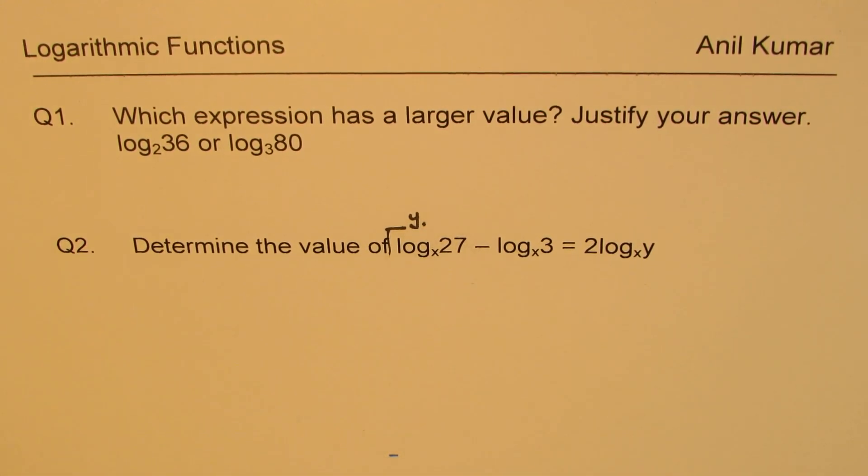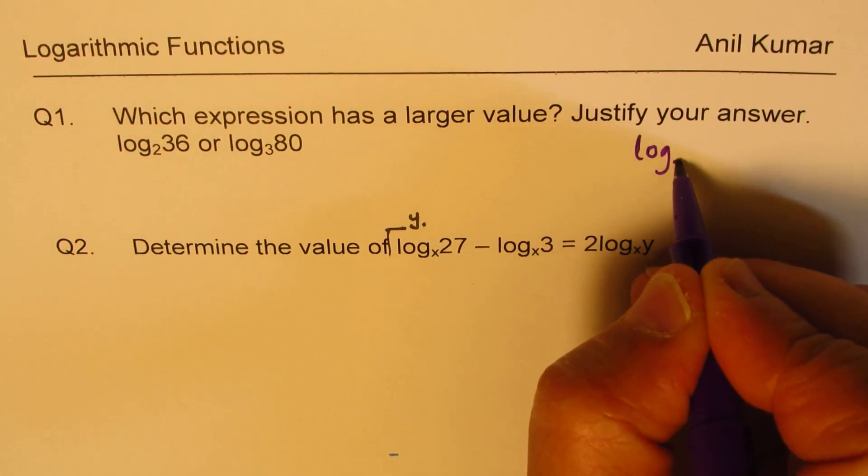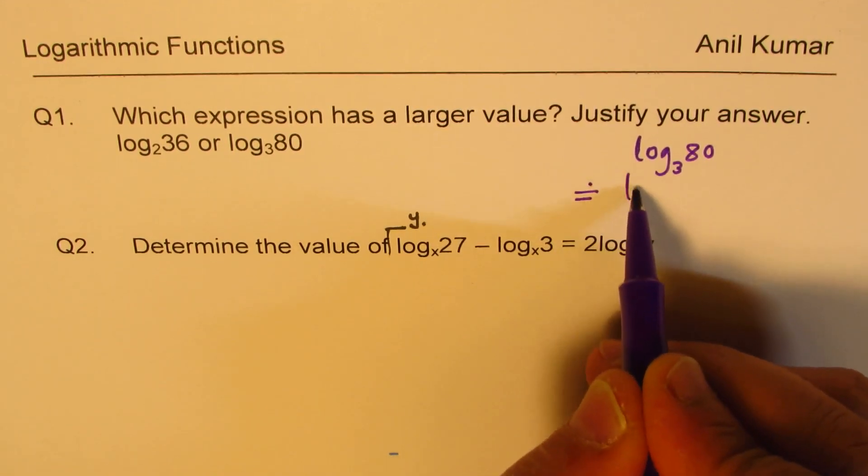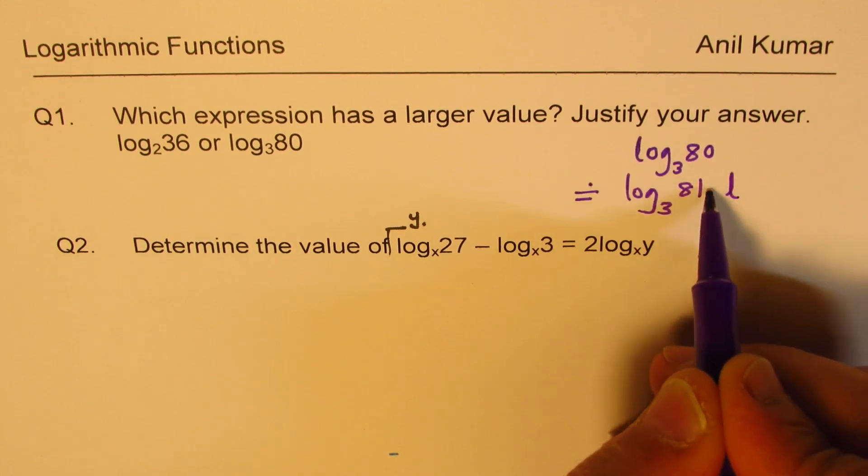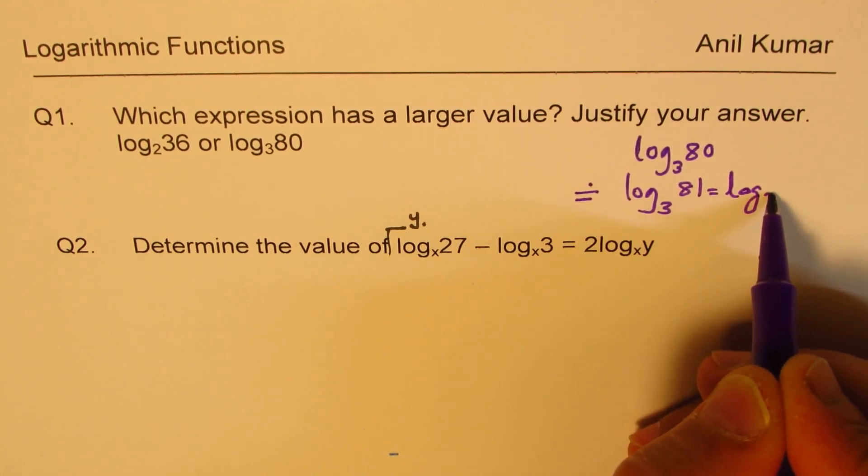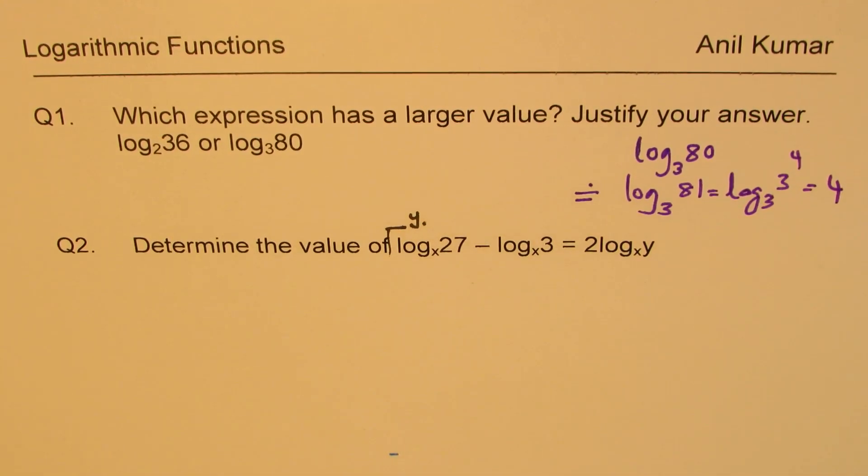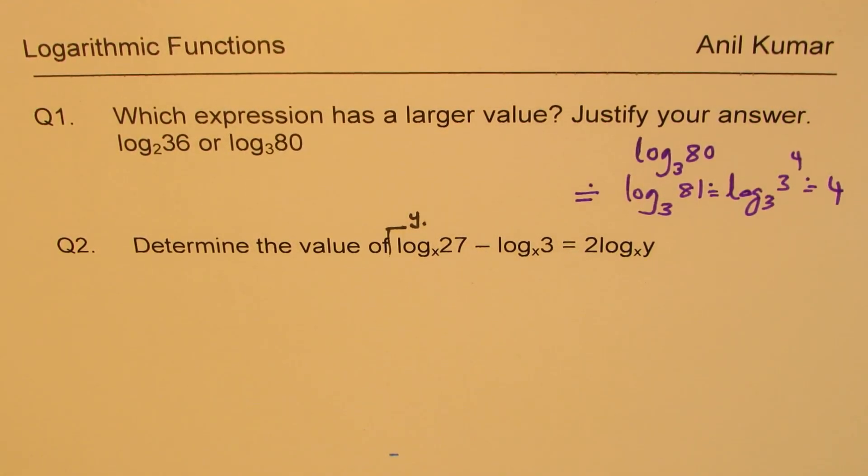The very first one. Let's look into what is log to the base 3 of 80. We could approximate this as log to the base 3 of 81, which equals log to the base 3 of 3 to the power of 4. So that gives you 4. Approximately, a bit lesser, but almost.